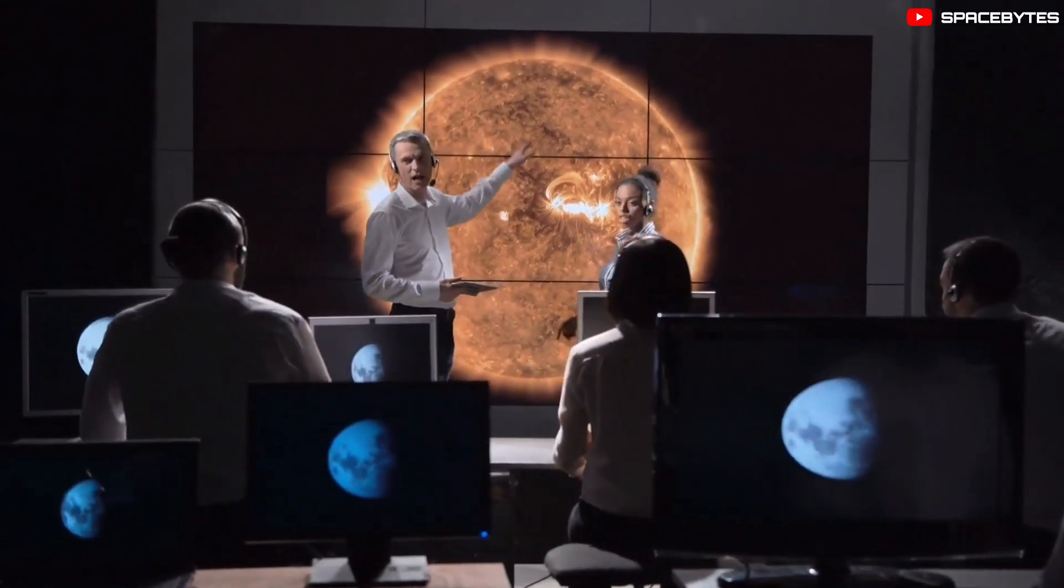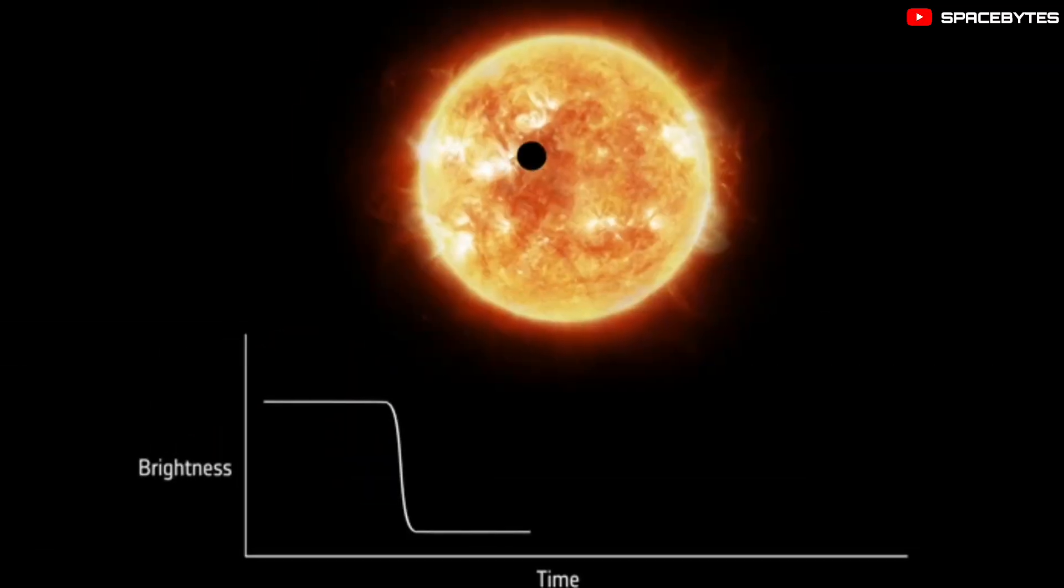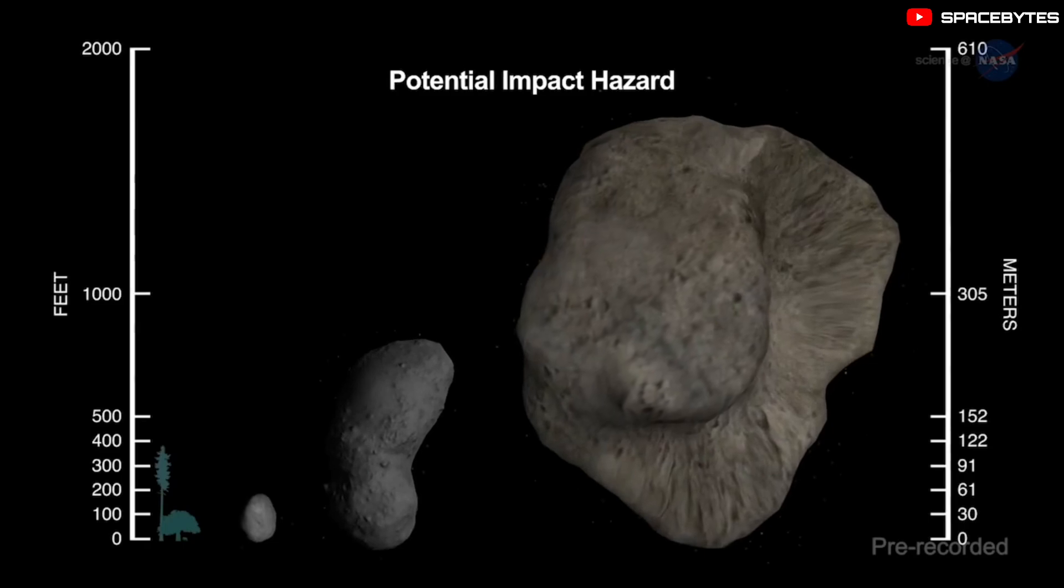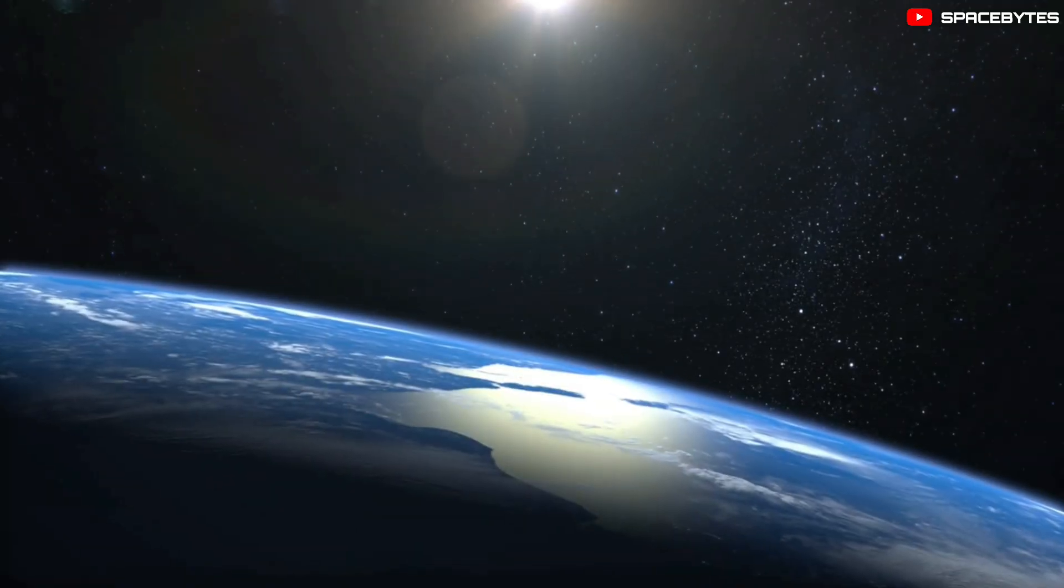Astronomers estimate the size of asteroids based on how bright they appear in the sky. Due to uncertainties, astronomers often provide a range for size estimates for asteroids.